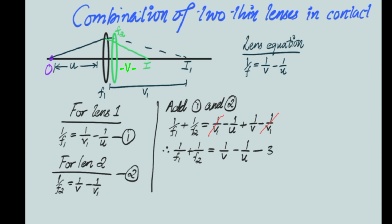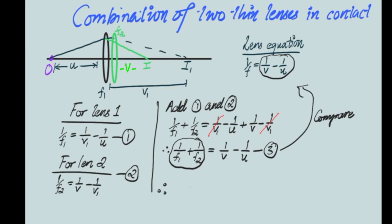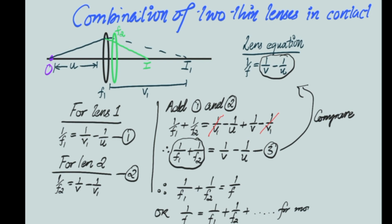Now we compare equation 3 with the standard lens equation. You will notice they are similar — the right-hand side is 1/v minus 1/u in both cases. That means 1/f1 + 1/f2 = 1/v minus 1/u, so comparing with 1/f = 1/v minus 1/u, we get 1/f = 1/f1 + 1/f2. This can be extended to more lenses: 1/f = 1/f1 + 1/f2 + 1/f3 and so on. Hence we have the equation for the combination of two thin lenses or more in contact. Thank you for watching.